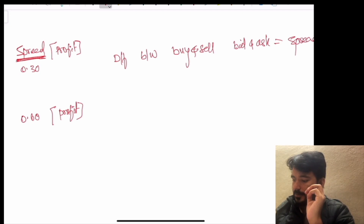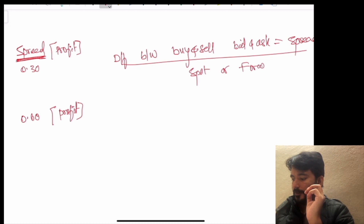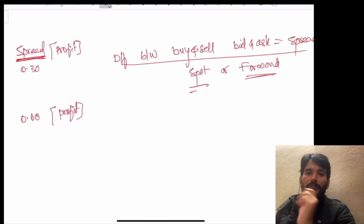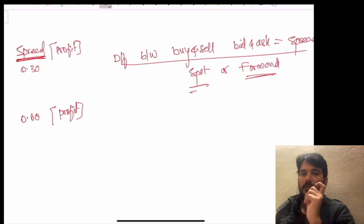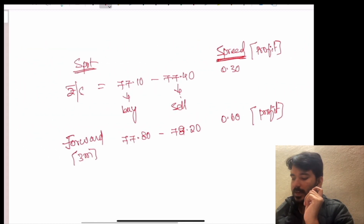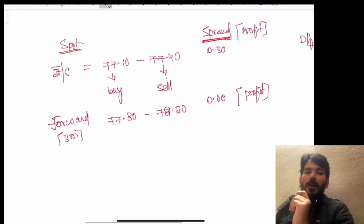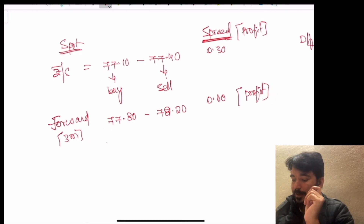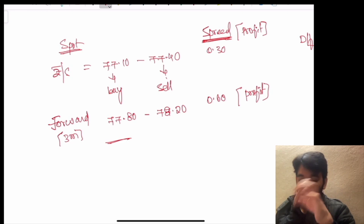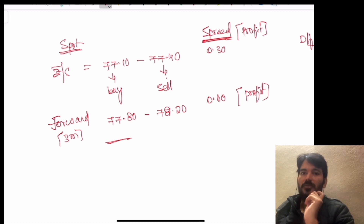It may be in the spot market or it can be in the forward market. In either case, the difference between buy and sell is your spread. The difference between buy and sell for the forward is also your spread. Now we are going to look at swap points — the difference between spot and forward for the buy currency.